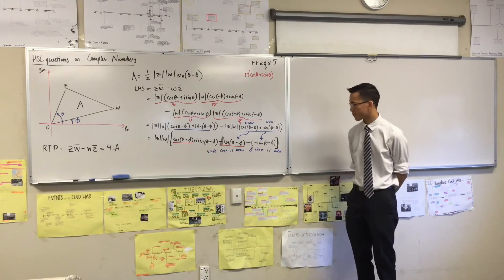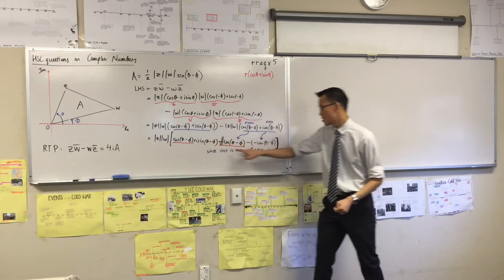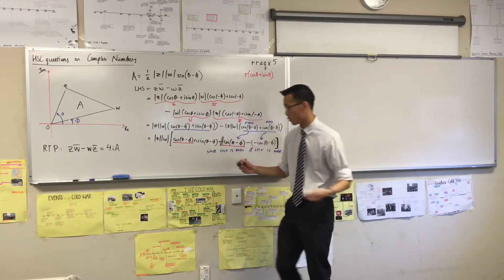What about the sines? What's going to happen to those? Yeah, I'm going to get two of them, aren't I? Because you've got i sine and then you've got a double negative here, i sine. So let's write this all out.